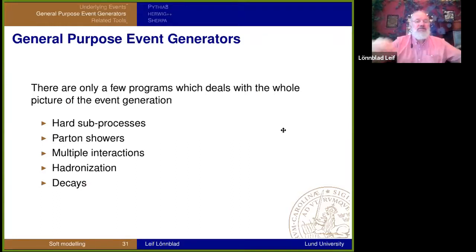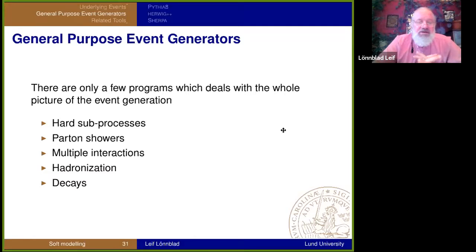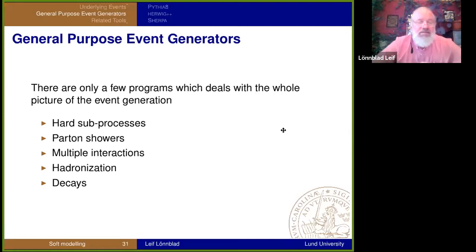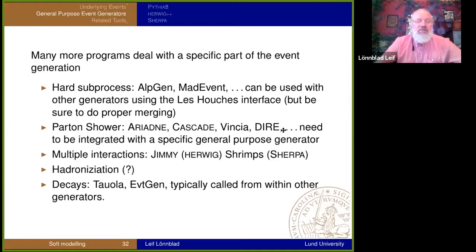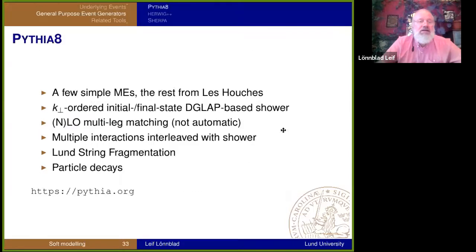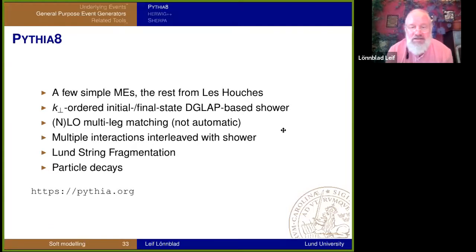Now I'm going to wrap up the general purpose event generators. There are only three programs we consider to be truly general purpose — meaning they can generate any process, including hard sub-processes, parton showers, multiple interactions, hadronization, and decays, going from scratch to generate a complete event at basically any collider. These three are Pythia, Sherpa, and Herwig, which you looked at in the first tutorial. There are many more event generators that concern themselves only with part of this.